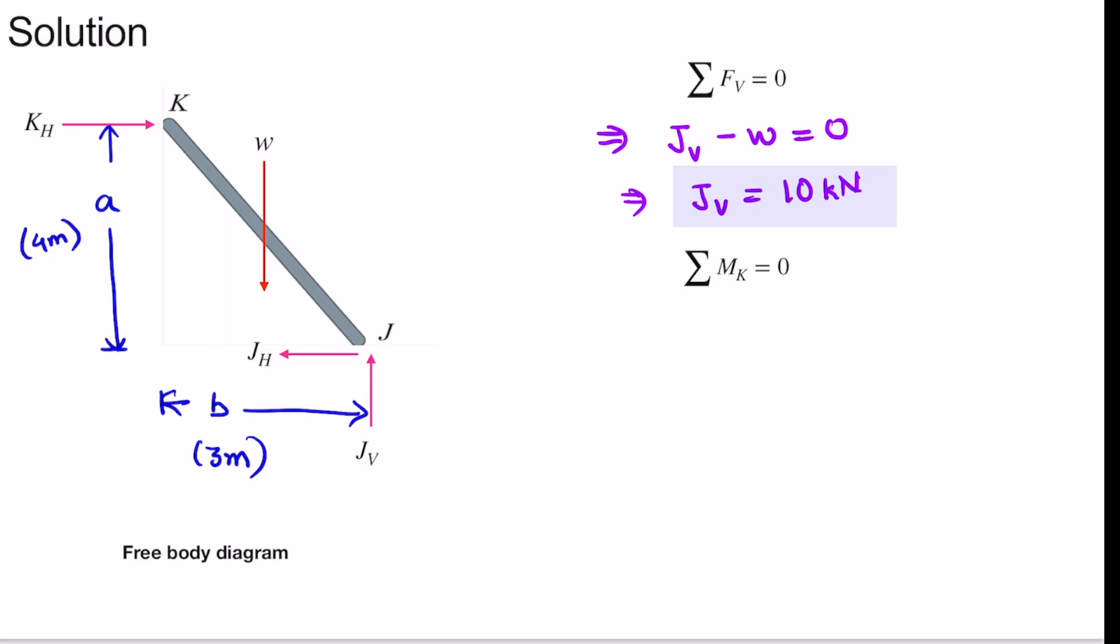Now we'll use summation of moment about point K as 0. So let's see what are all the forces here. When we take the summation of moment about point K as 0, we'll get JV multiplied by distance B which is 3 meters, minus JH multiplied by distance A which is 4 meters, minus W which is 10 kN multiplied by distance 1.5 meters. These are all the forces, so that is equal to 0.